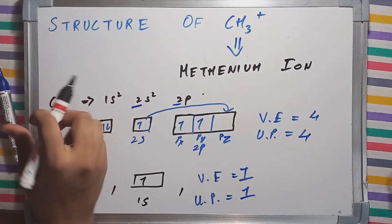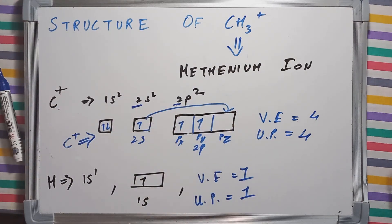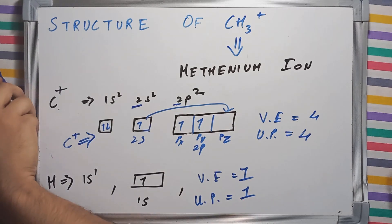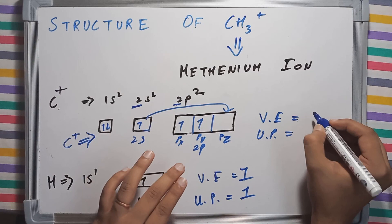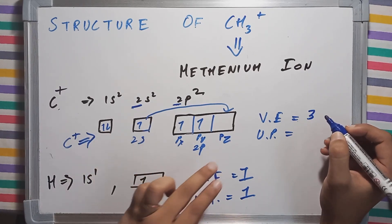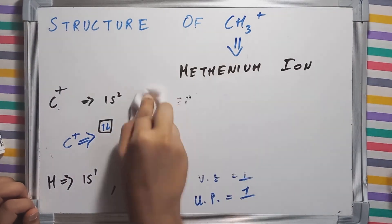I am going to take off all this. C plus 2s1 2p2. Now, the number of valence electrons are 3 and the number of unpaired electrons are also 3. Now, let's proceed with the structure of C plus ion.